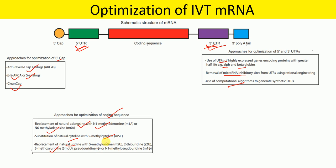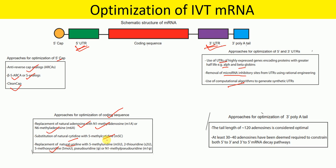For optimization of the 3' poly-A tail, a tail length of 120 adenosines is considered optimal. At least 30 to 40 adenosines have been deemed required to constrain both 5' to 3' and 3' to 5' mRNA decay pathways.